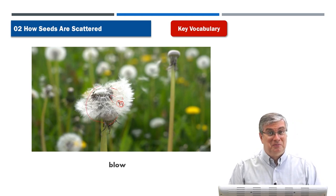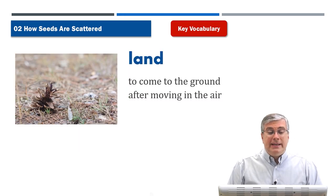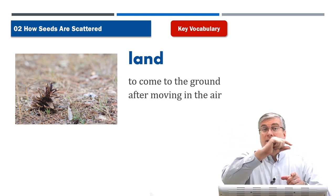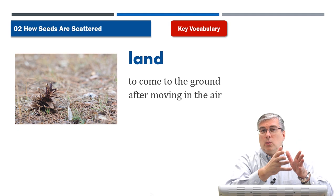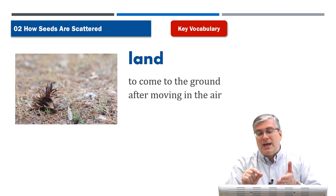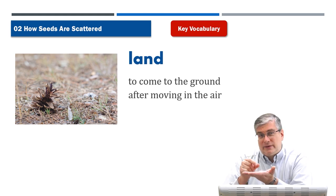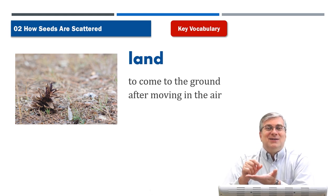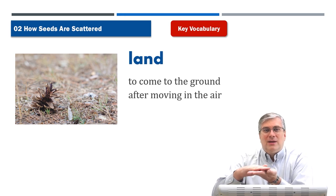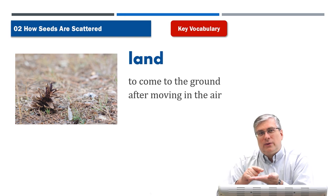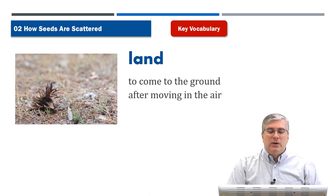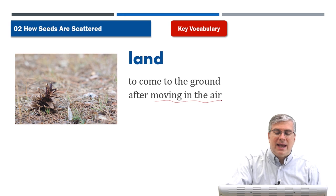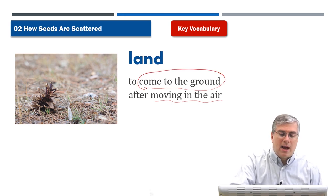Interestingly, you can predict weather by looking at a dandelion. If it's nice weather, the dandelion has a nice ball shape, but if there's high humidity and rain coming, the petals close up over the flower. Next, 'land.' If a dandelion seed is flying in the wind and the wind stops or gets weaker, the seed will come down and touch back onto the ground — we say it lands. 'Land' is a noun meaning the ground, but also a verb meaning to come to the ground after moving in the air.